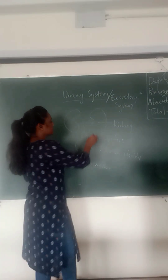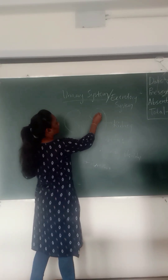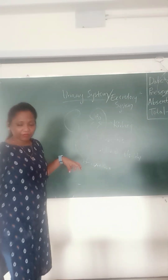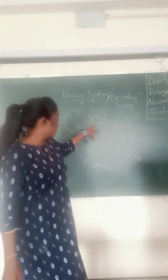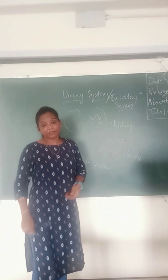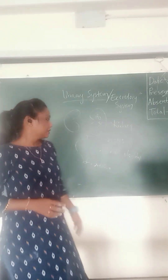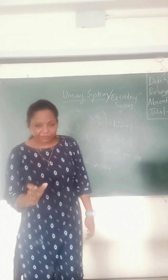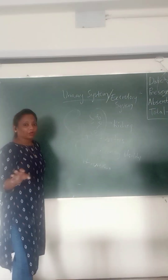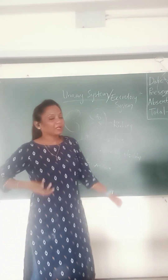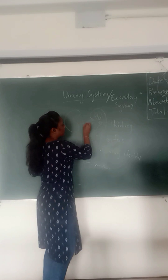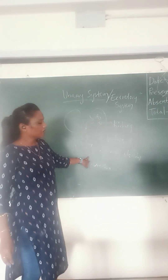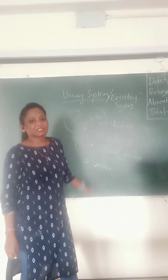Inside the kidneys there are different structures. If you look at the pyramids, within the pyramids you will see nephrons. The nephron is the functional unit of the kidney, and each kidney has millions of nephrons. The nephrons perform the major functions of the kidney. The glomerulus of the kidney filters the blood — whatever is needed is reabsorbed, and whatever is waste is expelled into the ureters.